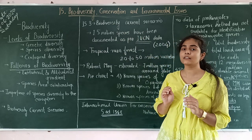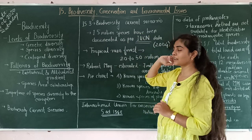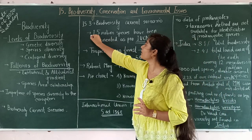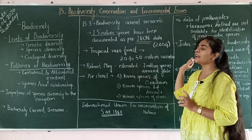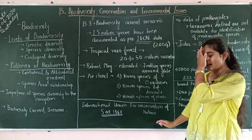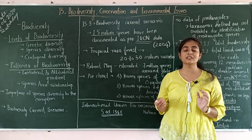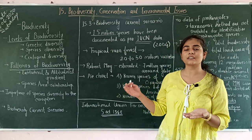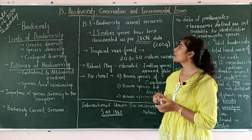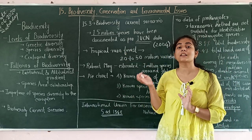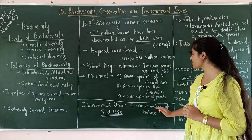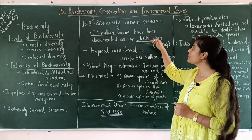Biodiversity current scenario: till now there are 1.5 million species — animals, plants, different species — documented as per IUCN data. IUCN stands for International Union for Conservation of Nature. It is an international organization that surveys the whole earth's biodiversity, records species that have gone extinct or have been newly studied, and updates the data. IUCN is mentioned in your textbook.